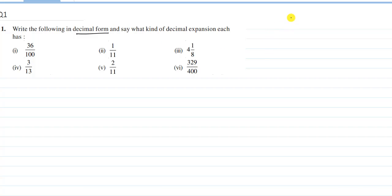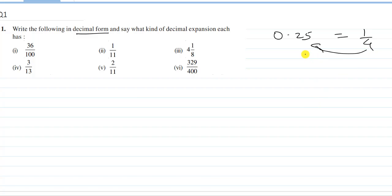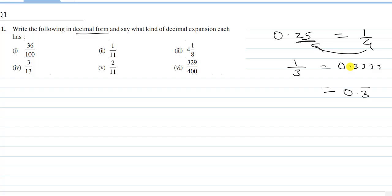We know we have two types of decimal expansion. It should be terminating — for example, 1/4 is converted to 0.25, and it is terminating because all the numbers after the decimal point end, there is no repeating digit and they are not infinite. If 1/3 is converted into 0.3333... we write it as 0.3 bar, which is a repeating number. So mainly two types: terminating and non-terminating repeating, as we have seen in our previous class.